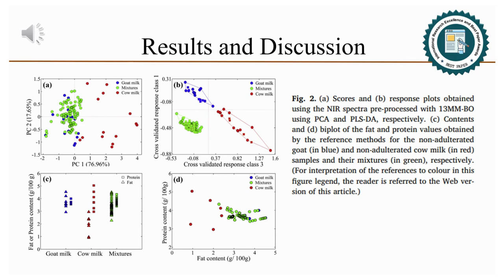Therefore, PLSDA achieved 100% of accuracy, sensibility, and specificity in the simultaneous identification of non-adulterated goat milk, non-adulterated cow milk, and also goat milk adulterated with cow milk.